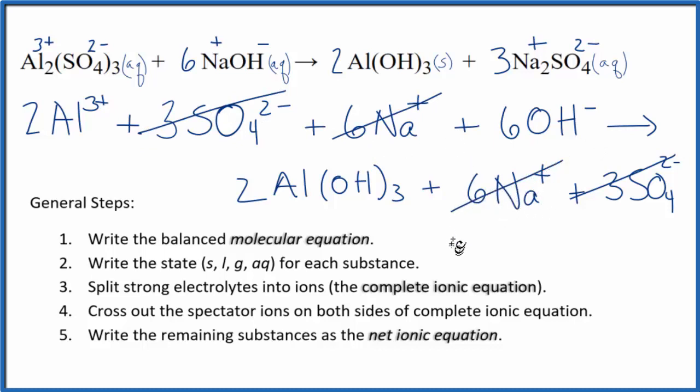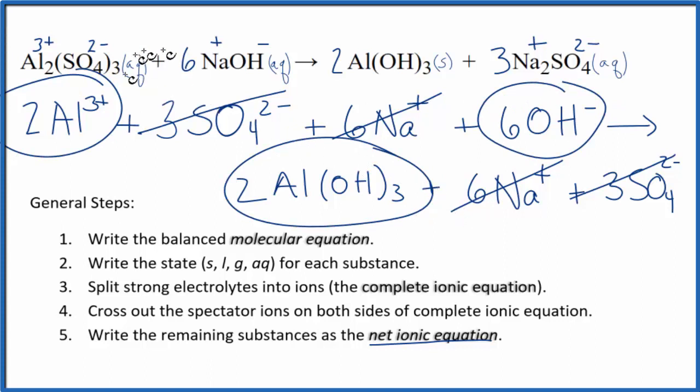What's left will be the net ionic equation. So we have here, here and here. Let me clean that up and then I'll add the states in as well and we'll have the net ionic equation for aluminum sulfate plus sodium hydroxide.